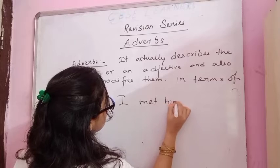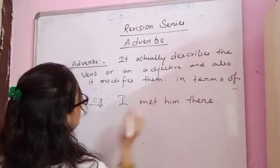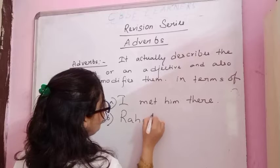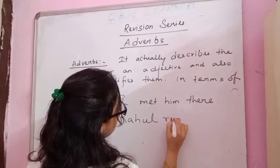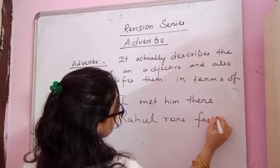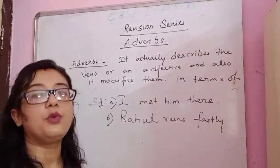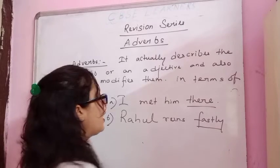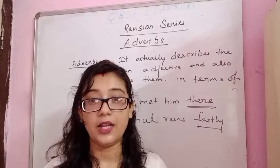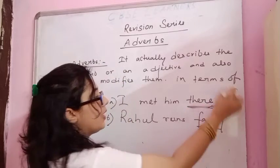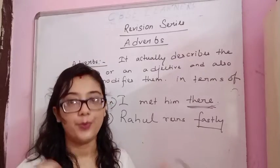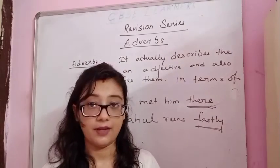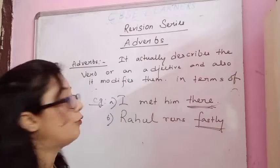For example: 'I met him today.' And 'Rahul runs fastly' — you can use fastly, or if you want, slowly. These words are adverbs. 'I met him there' — the question arising is where you met, and it gives you the place where the action has been done. The second sentence gives you how, what is the degree, to what extent he ran — how the work is done: fastly.